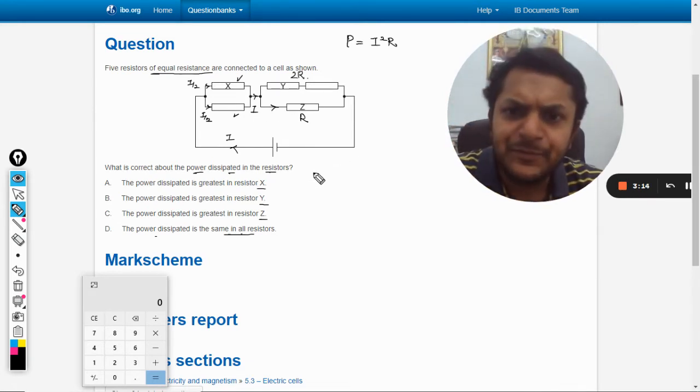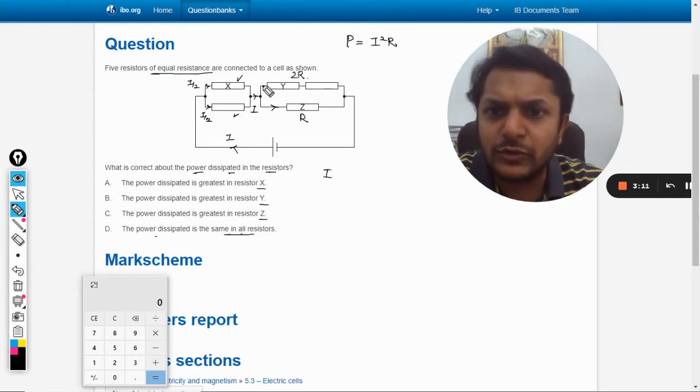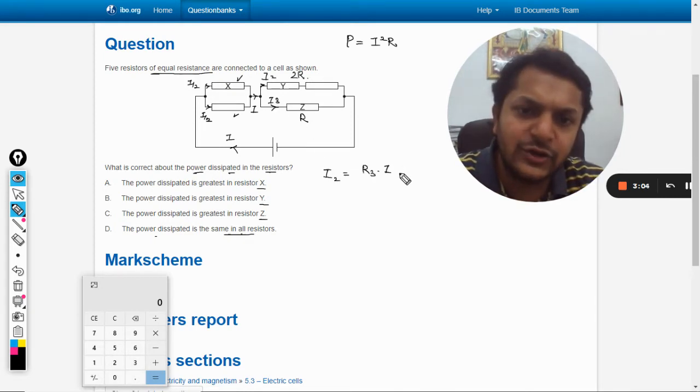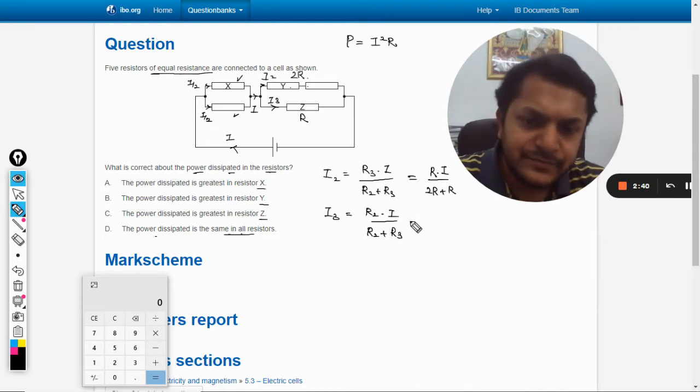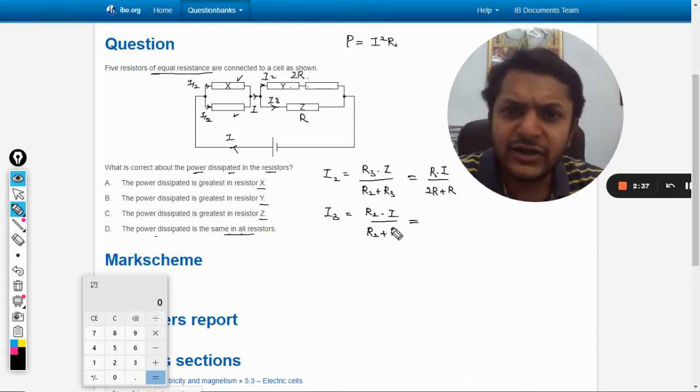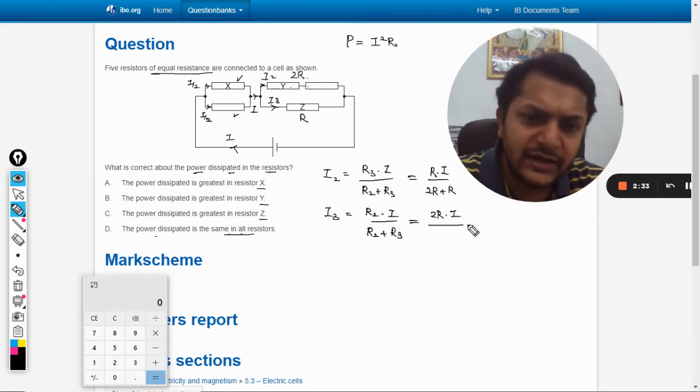But how much? Let us see. As I have earlier given you this formula many times, this is i2 and this is i3. So i2 will be R3 into the total current divided by R2 plus R3, and i3 will be equal to R2 into i divided by R2 plus R3. Let us see. So i2, let us take this resistance as R, i divided by R plus 2R, which is R plus R, and similarly i3 will be 2R into i divided by 2R plus R.